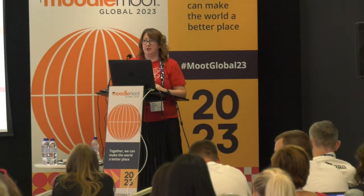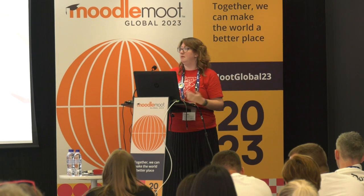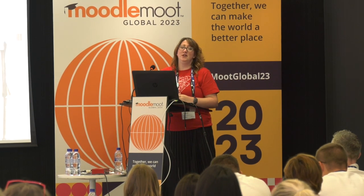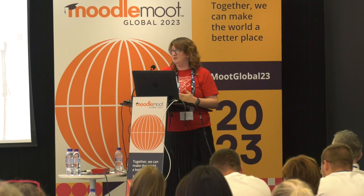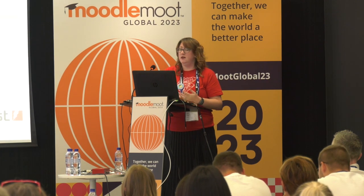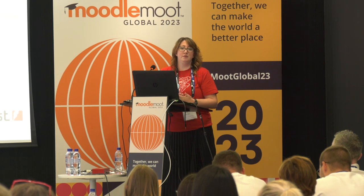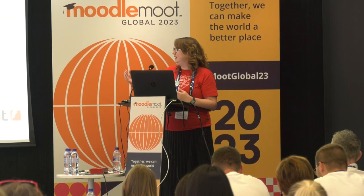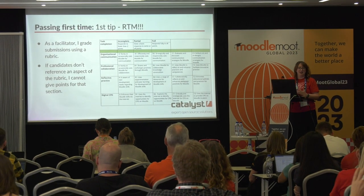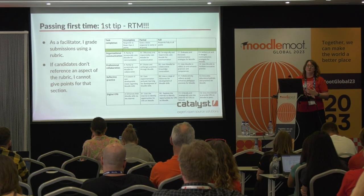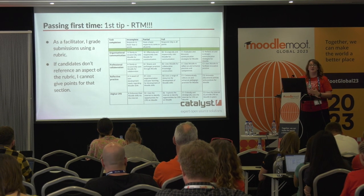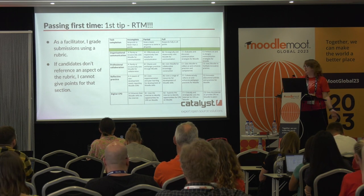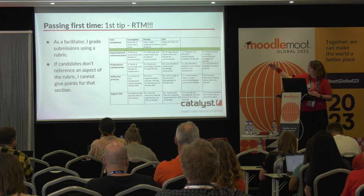So my tips for how to pass first time — I've got four. My first one is: read the manual. As an assessor and facilitator, I am given a rubric to grade you against. I cannot give you grades and feedback on something that is not there. So please, when you are presented with a rubric, read it and see what it is I have to grade you against. A big example is the module on professional practice — you are meant to mention CPD opportunities and how you share that within your organisation. A lot of people forget to even mention digital CPD, and that's a big chunk of your grade gone. So please reference each part of the rubric.